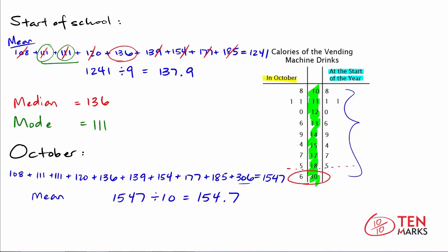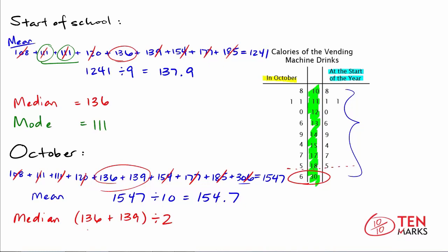Now let's talk about the median for October. Again, we're looking for the middle value. We cross off pairs of data points until we're left with one or two. This time we get down to two data values. When you have an even number of data points, you find the average of the two middle values to get the median. So the median equals (136 + 139) ÷ 2. That's 275 ÷ 2, which gives 137.5 — so 137.5 is the median of the October data set.